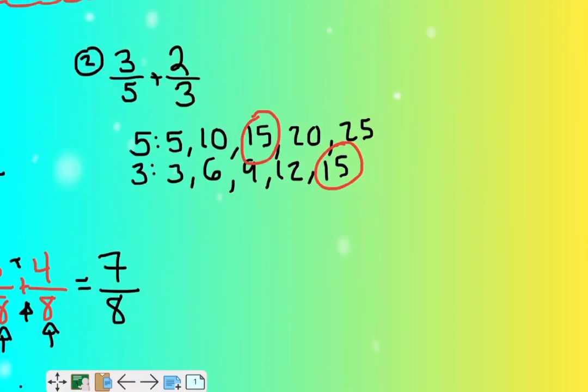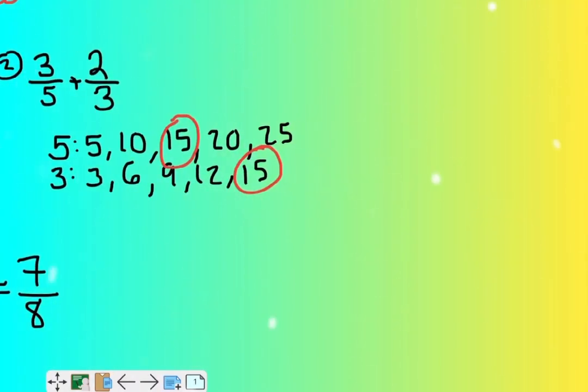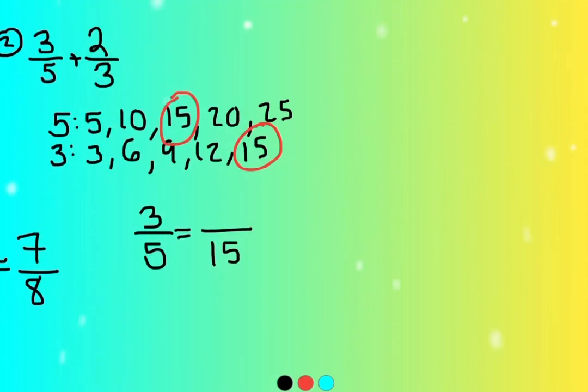So I'm going to have to change my three fifths into fifteenths. And I'm going to have to change my two thirds into fifteenths. Just ask yourself, what do you have to multiply to get to here? Well, five times three is fifteen. Whatever you do to the bottom, you have to do to the top. Three times three is nine.